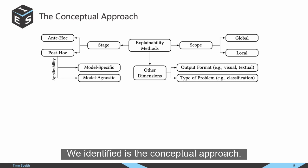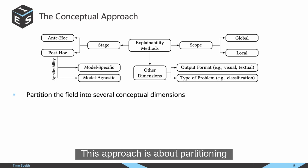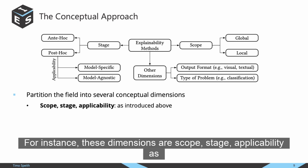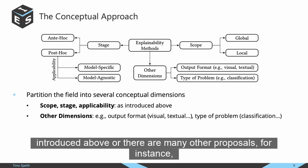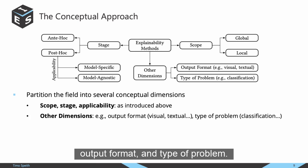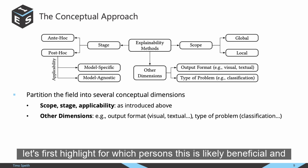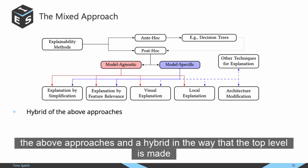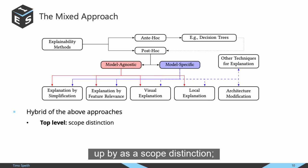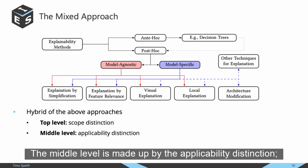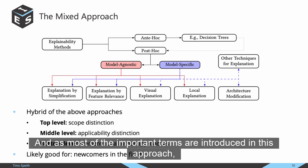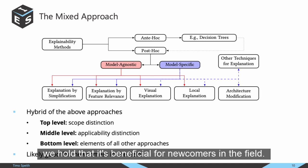The third approach is the conceptual approach, which partitions the field of explainability methods into several mostly independent conceptual dimensions — for instance, scope, stage, applicability as introduced, or other proposals like output format and type of problem. We hope this is very beneficial for interdisciplinary research. The fourth and final approach is a mixed approach: a hybrid where the top level is made up by the scope distinction, the middle level by applicability, and the bottom level has elements of all other approaches. We hope this is beneficial for newcomers to the field.